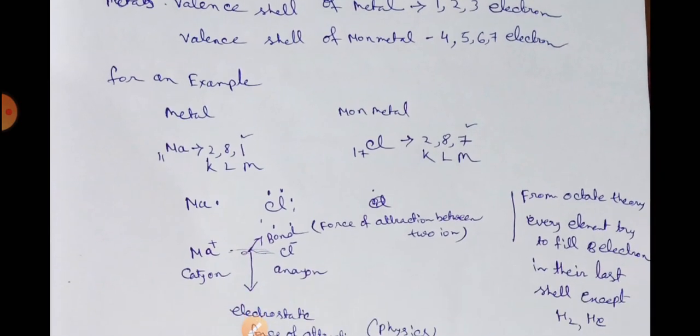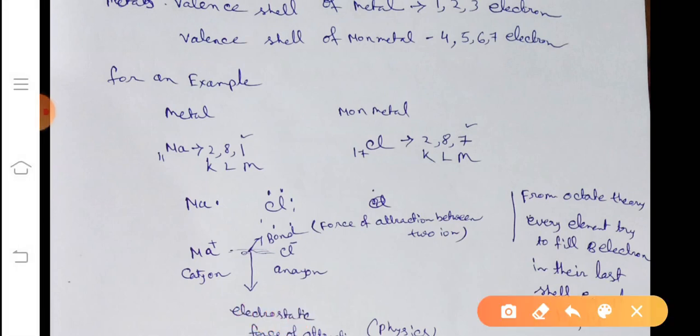Now if I give the dot, that is electron, in the last shell sodium, 1 electron is present. So I give a dot in the case of sodium, and chlorine, I give 7 dots.